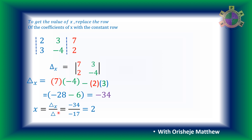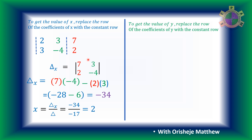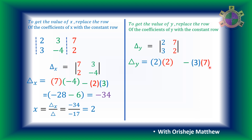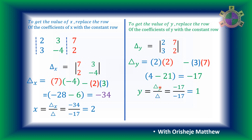Now let's find the value of y. To eliminate y, we replace the column of the coefficients of y — that is 3 and negative 4 — with the constants 7 and 2. Finding the determinant: 2 multiplied by 2 is 4, take away 3 multiplied by 7 which is 21. So 4 take away 21 gives us negative 17 — that is delta y. So y equals delta y divided by delta naught: negative 17 divided by negative 17, giving y equal to 1.